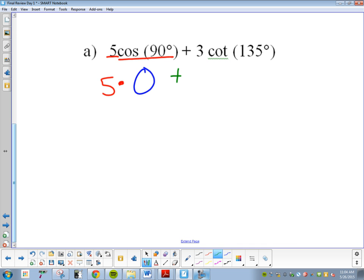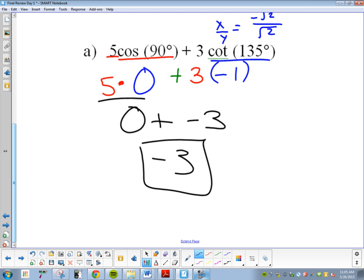Plus, 3 times cotangent of 135. So, we go to 135 degrees, Victoria. And, we are doing x over y because that is what cotangent is. What is our x at 135 degrees? Negative radical 2 over radical 2. So, what is negative radical 2 over radical 2 going to get me? Negative 1. So, cotangent of 135 is negative 1. So, it is 3 times negative 1. What is 5 times 0? What is 3 times negative 1? My answer is negative 3.